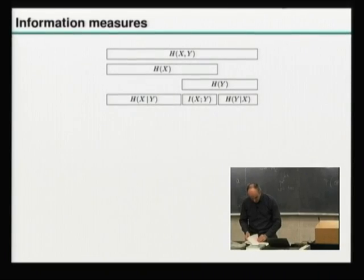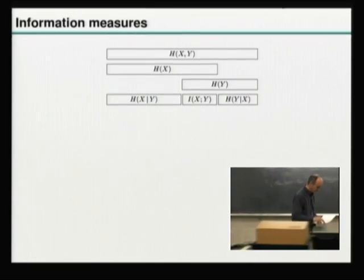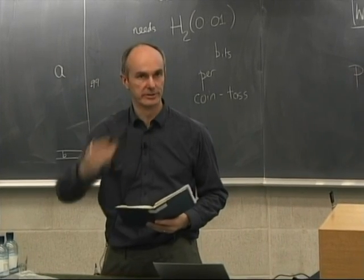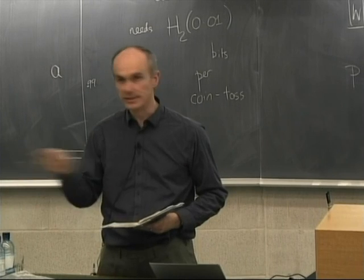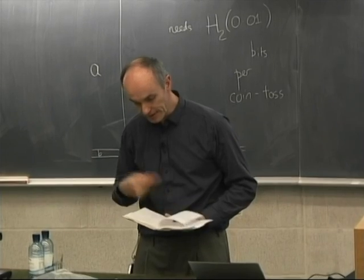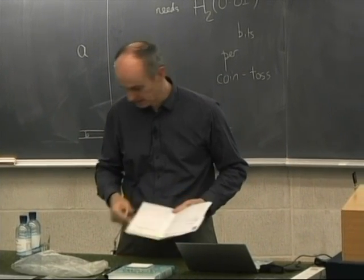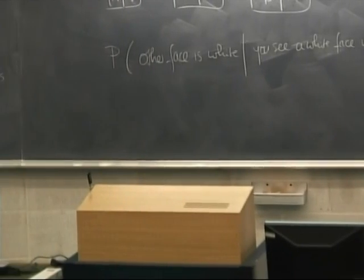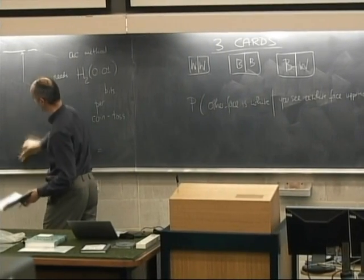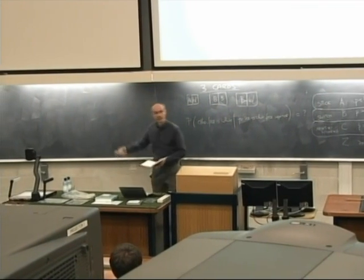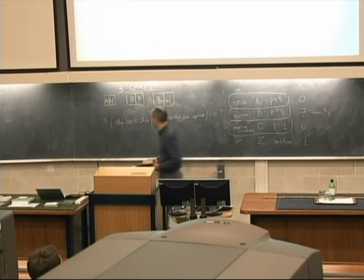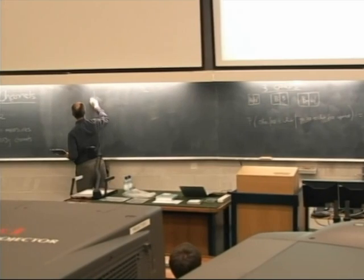What we're going to do with noisy channels: they always have an input and an output. A channel defines a set of conditional distributions - if you condition on an input, the channel defines the probability distribution over outputs. The channel doesn't define a joint distribution; it just defines conditional distributions. We can only do inference with a joint distribution, so we need a joint distribution. I'll run through a simple example assuming I have a joint distribution.